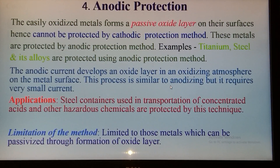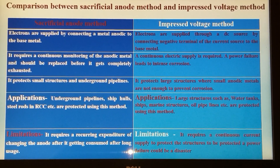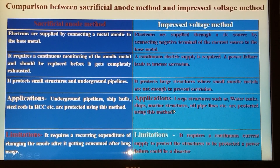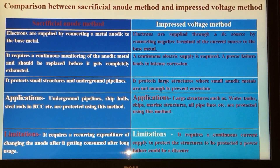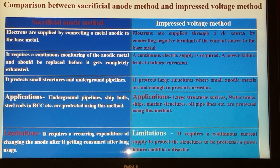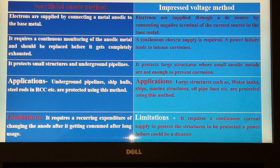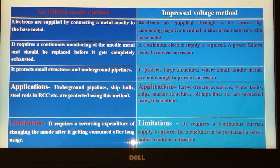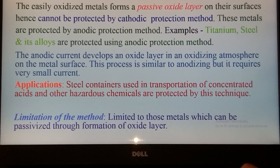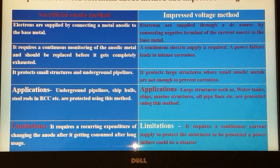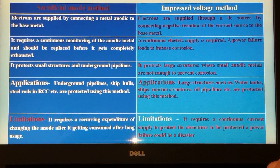The sacrificial anode method protects only small structures and underground pipelines, including hulls of ships and steel rods embedded in RCC. The impressed voltage method is used for protecting large structures such as large water tanks, ships, marine structures, and oil pipelines. The limitation of the sacrificial anode method is recurring expenditure of changing the anode, while the impressed voltage method requires a continuous supply of current to prevent intense corrosion.